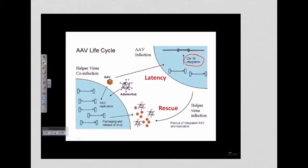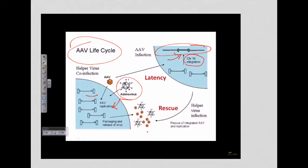Looking at the life cycle of AAV, it usually integrates its genome into chromosome 19. However, if the cells are also infected by adenoviruses, the AAV will use the protein machinery and structural proteins produced by the adenovirus to form its own virus particles. It will then dissociate its genome from the host cell chromosome, get packaged inside a viral particle, and release itself from the cell. In other words, adenoviruses help in rescuing the AAV genome.